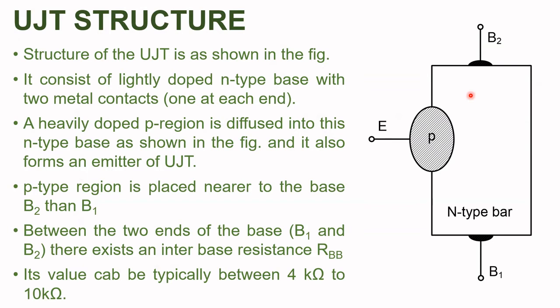Let us start with the structure of UJT. The UJT has one very lightly doped n-type base. To this base, a heavily doped small p-type region is diffused. The junction between this p-type region and the n-type base forms a p-n junction. This complete structure forms the UJT. To the n-type base, at the two ends, metal contacts are connected, which act as base 1 and base 2. To the p-type region, a metal contact is connected which acts as the emitter.